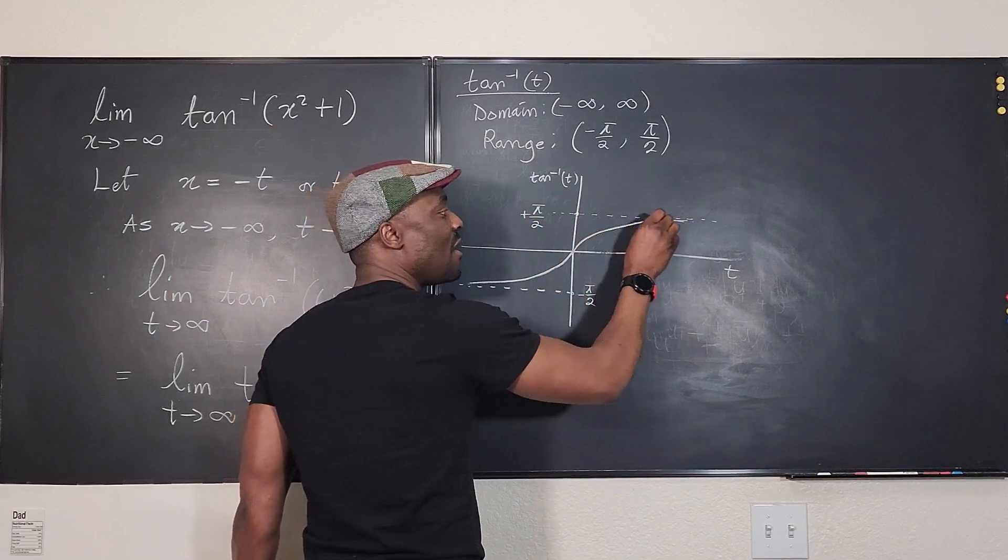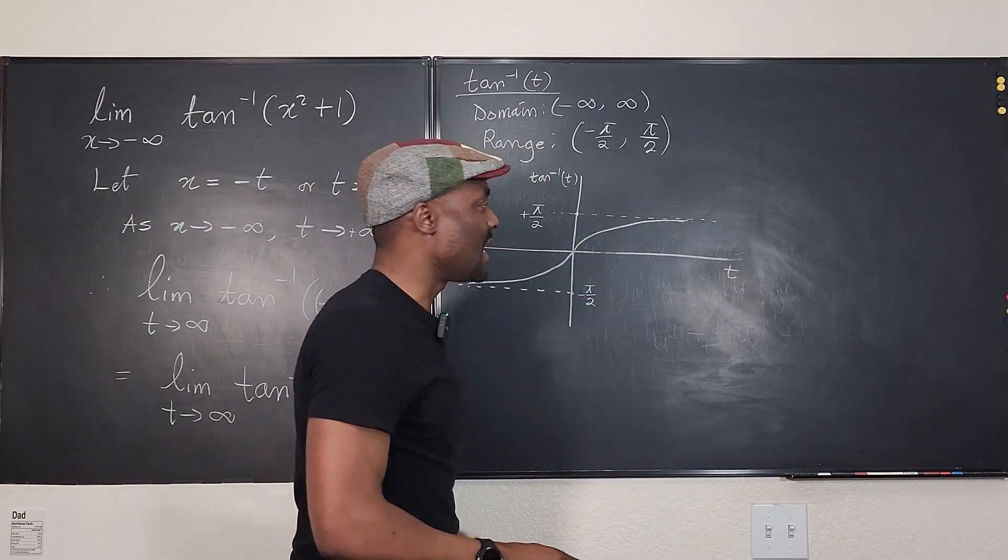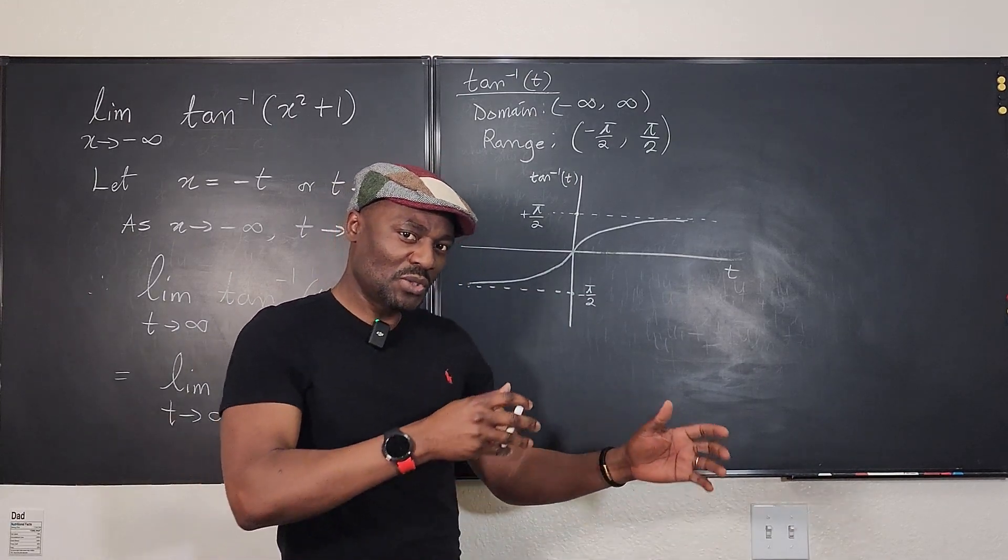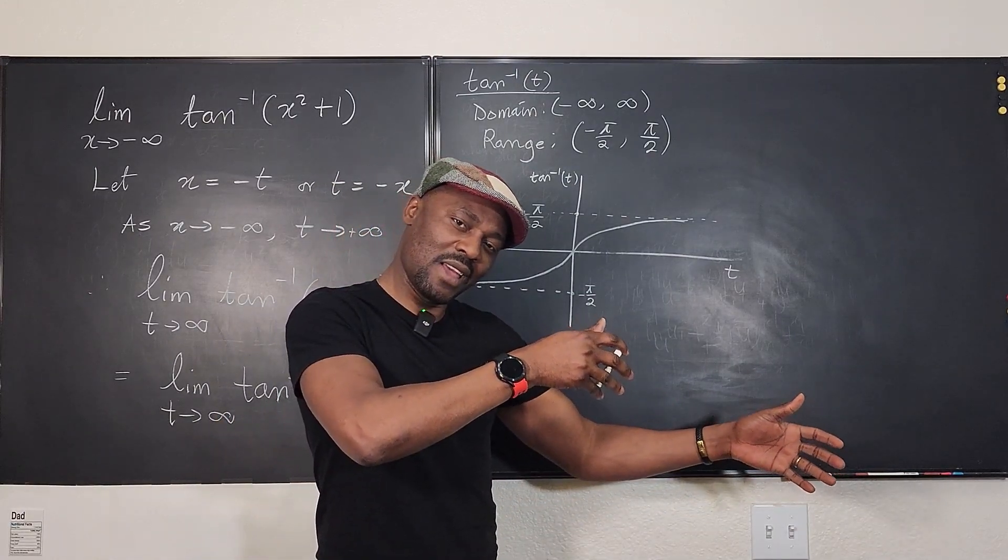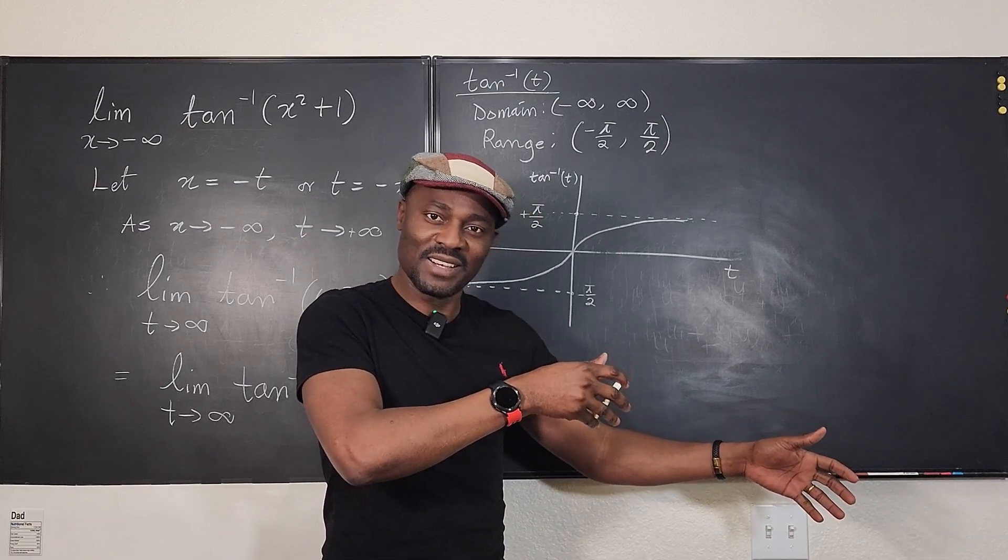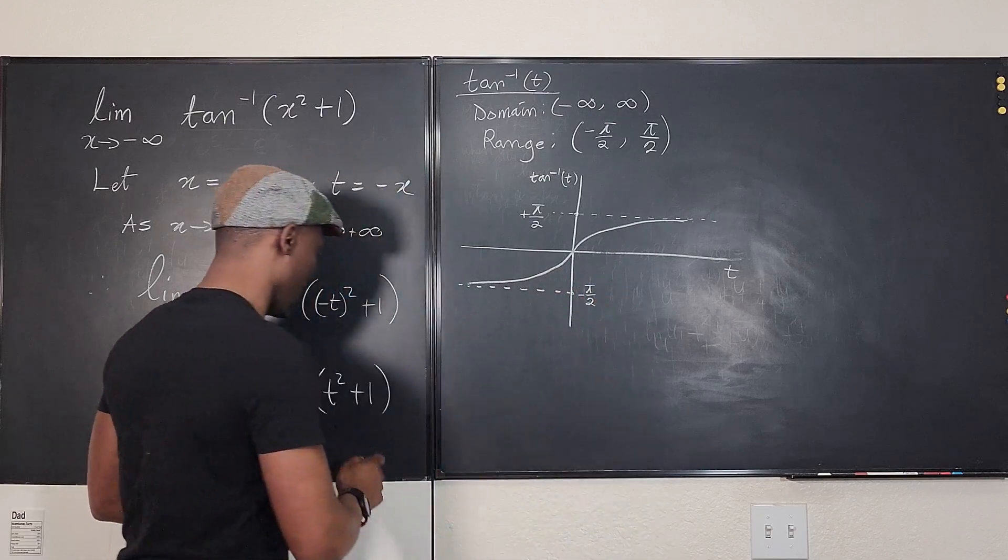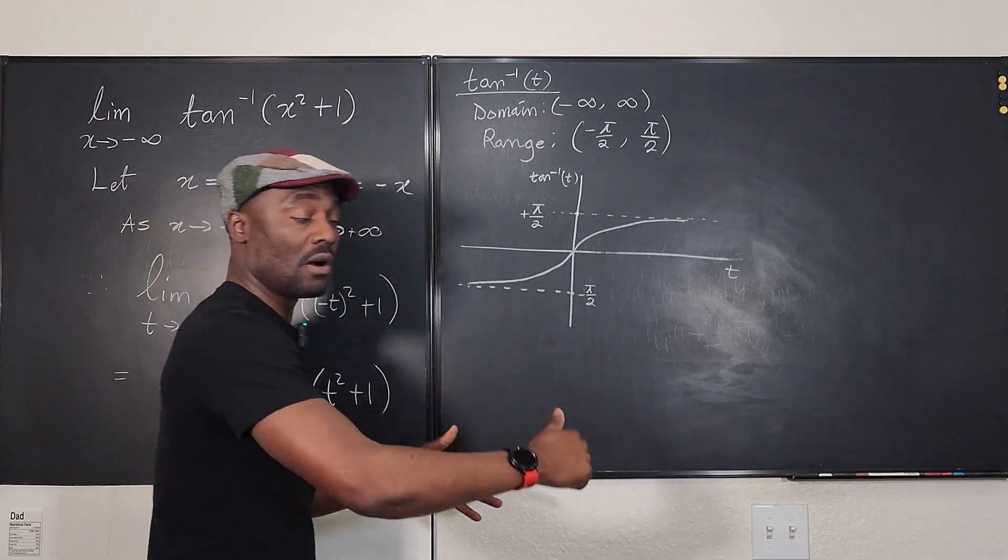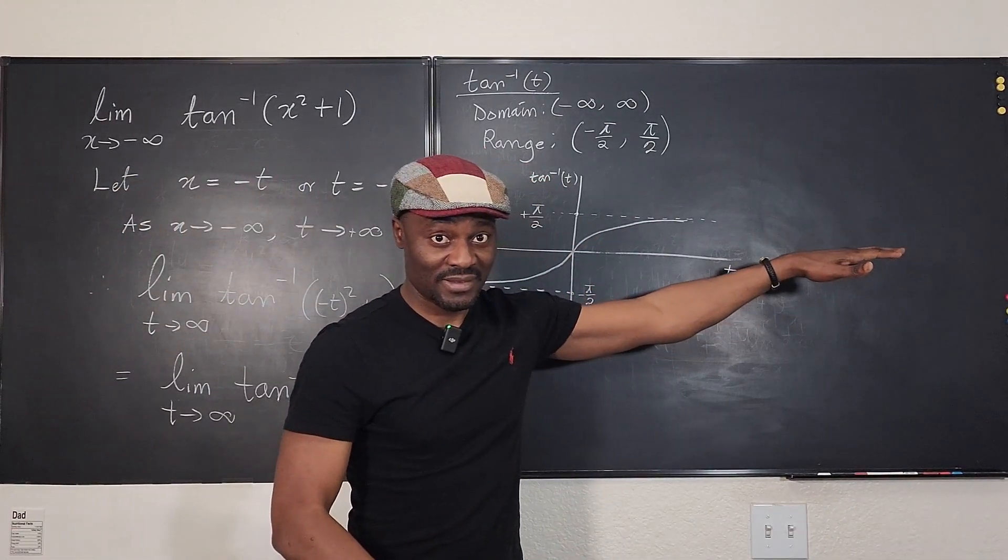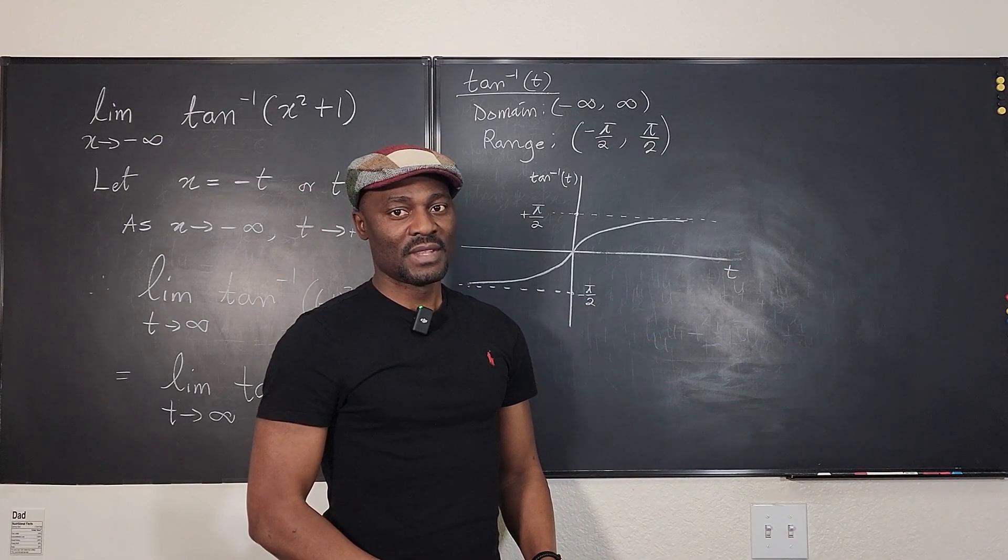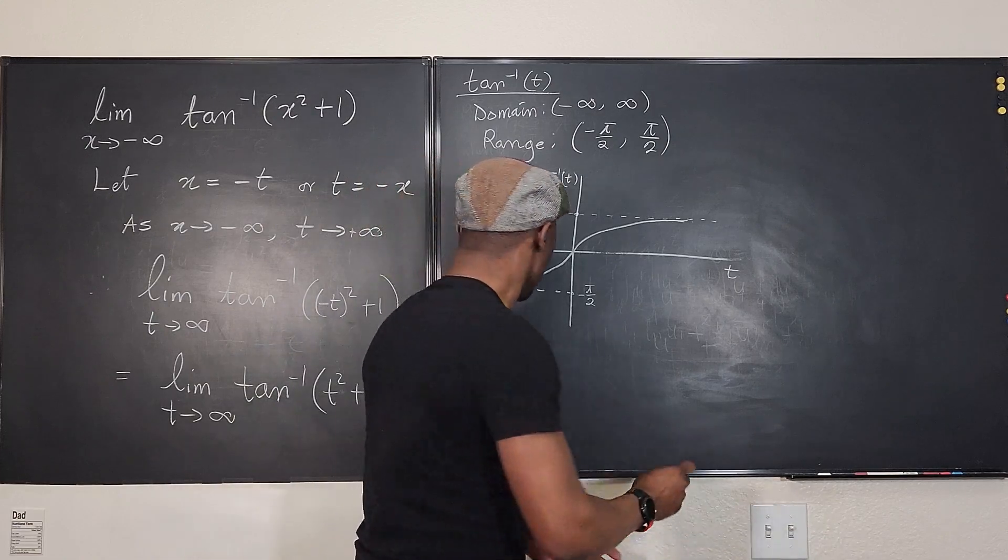You will keep approaching this line but you will never get to this line. And what is the line? We said that if a function is approaching something, that's the limit. So the limit of this function as t gets larger and larger, the limit is π/2. You've got to see that. And that's it.